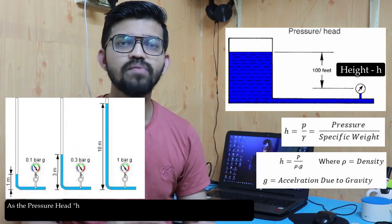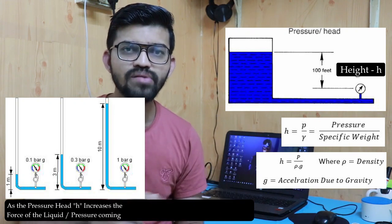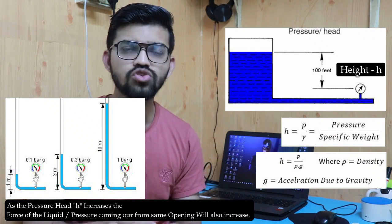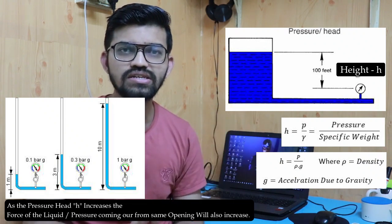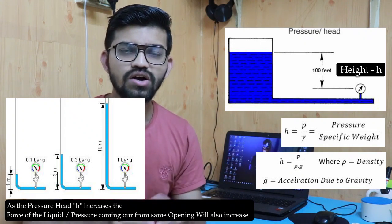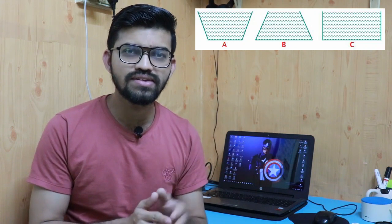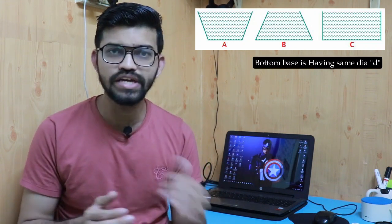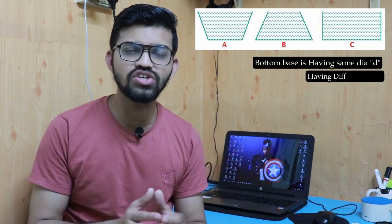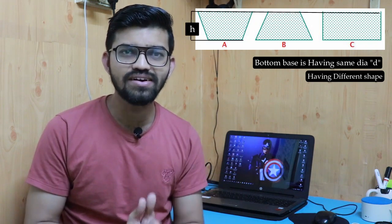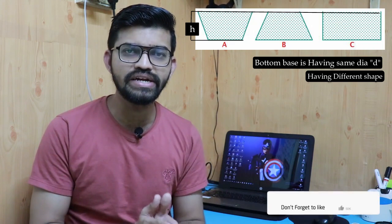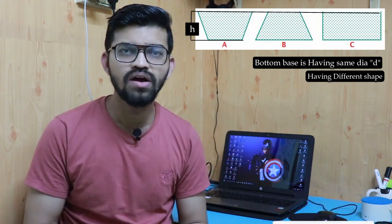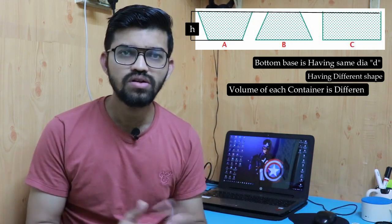As the pressure head increases — keeping the bottom area or the opening at the bottom through which the liquid flows constant — the force of the liquid flowing out will increase. Suppose we have three containers: at the bottom side each has the same diameter d, but on the top side they have irregular or different shapes. The height of water maintained in each container is the same, let's say h. The volume of all these containers is different.